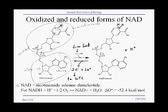In the process, a hydrogen gets attached here, so now this carbon atom has two hydrogens, and some of these bonds in this region rearrange so that this nitrogen becomes neutral. This is what we call NADH, which is the reduced form. I've written another proton here to actually balance the equation.